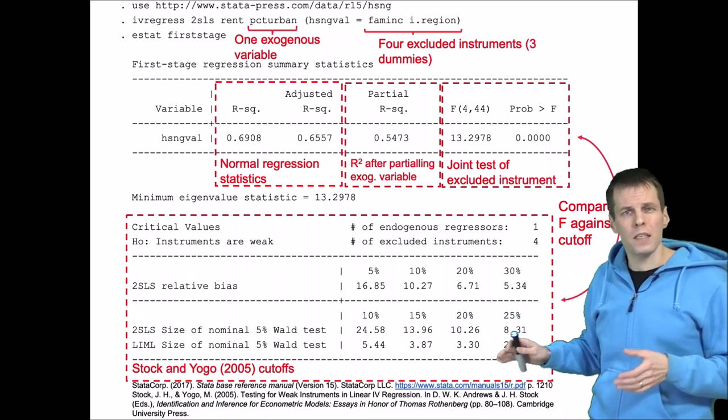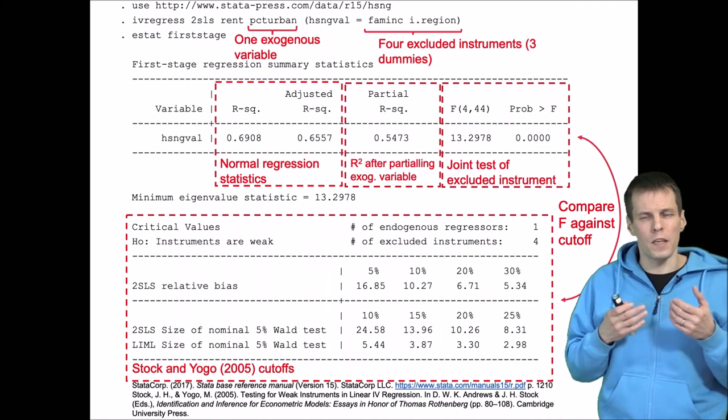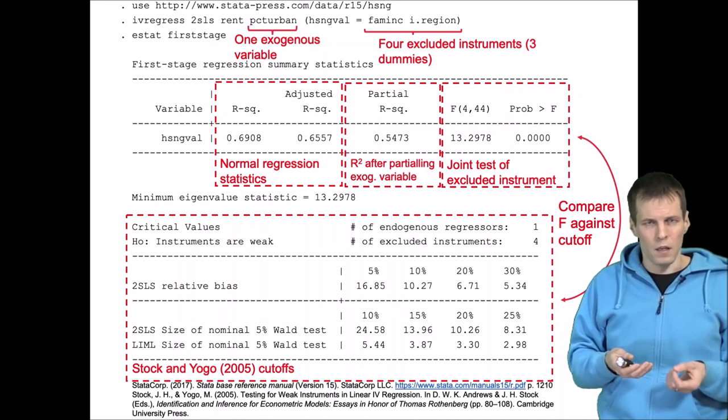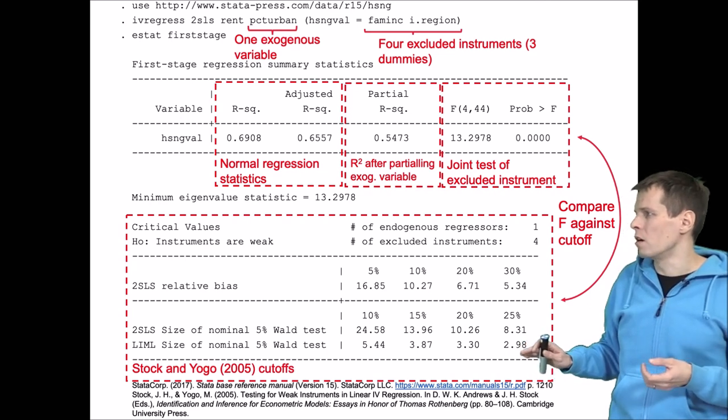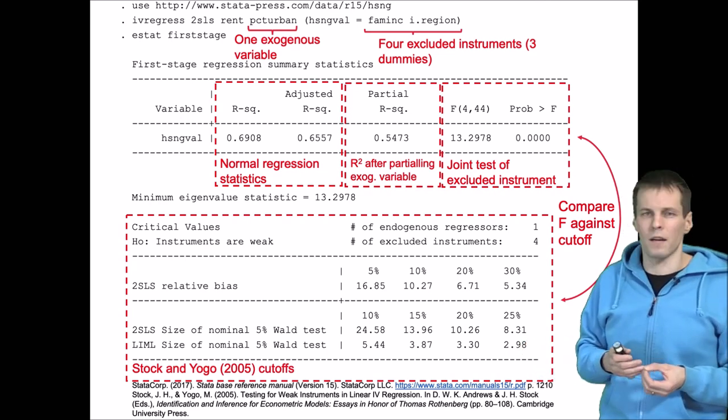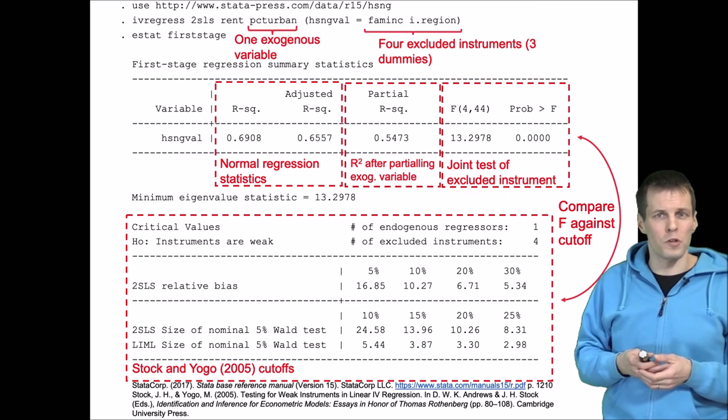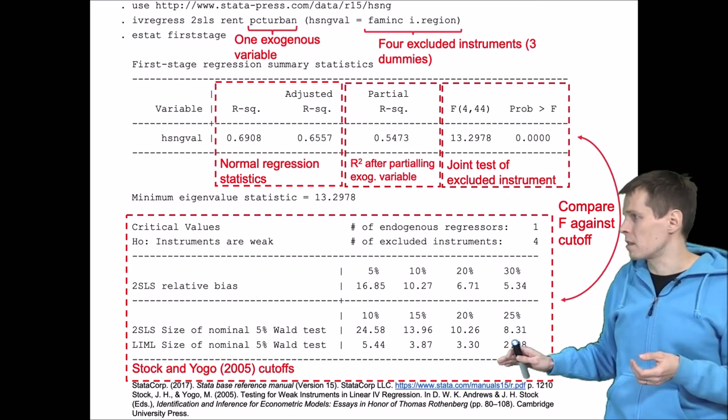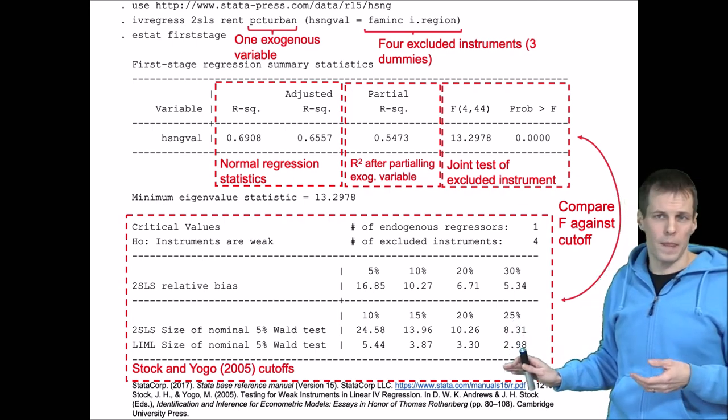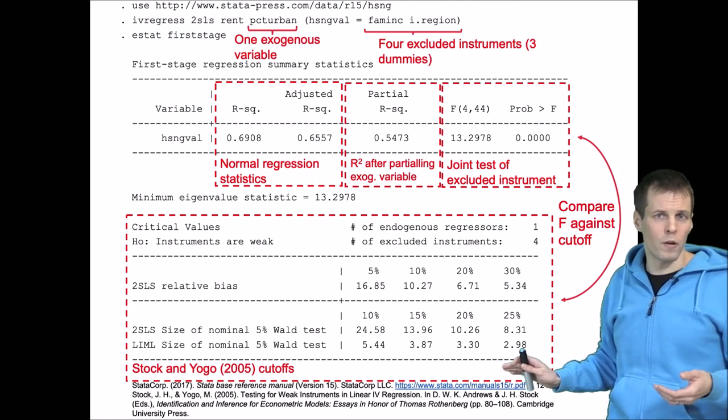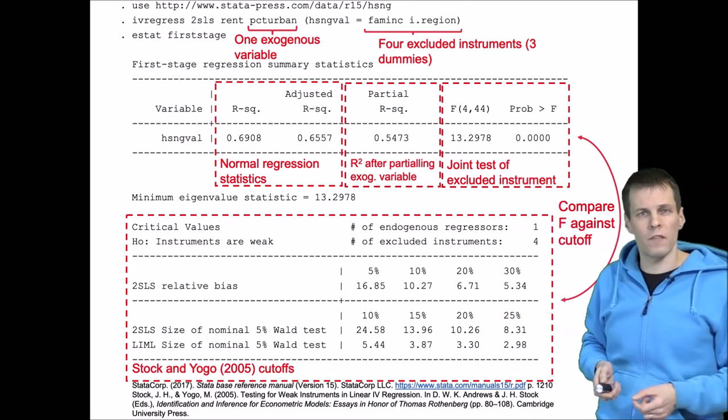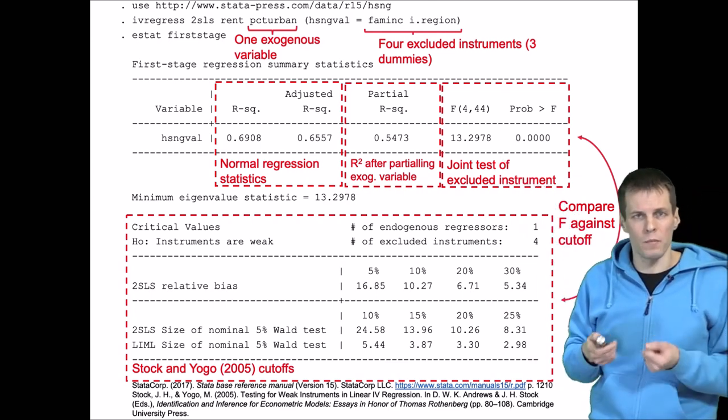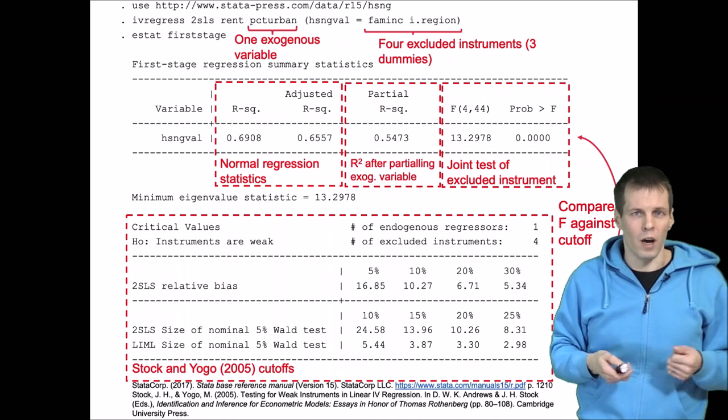So basically, the weak instruments issue here is that you need to decide how much bias and how much false positives you are willing to accept, and then you choose your cutoff for the F statistic based on the acceptable level of bias and false positives. You compare the F statistic: if it's larger then you're okay, if it's smaller then you have a problem.